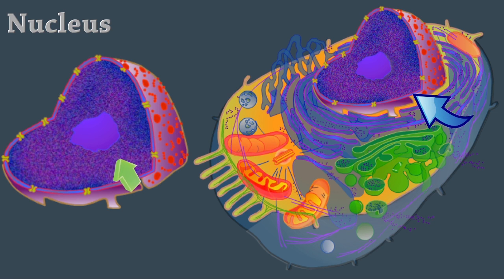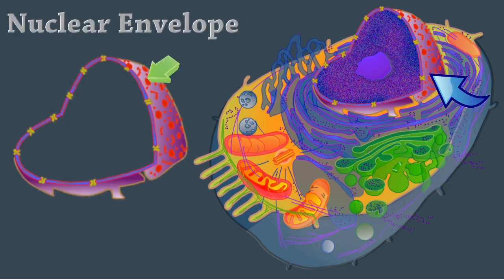It acts as the control center of the cell and is responsible for the instructions for protein synthesis and for transmitting DNA to the daughter cells. The nuclear envelope is a double membrane structure that is pierced by pores. The outer membrane is continuous with the endoplasmic reticulum.